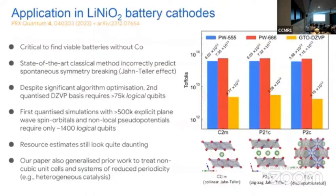Here's the example for the battery cathodes, comparing to an earlier work using a different approach, shown as bars for a couple of example materials. The idea is that simulating batteries allows designing them — say, batteries without cobalt — where classical simulation tends to be quite challenging and can give incorrect predictions. Our Toffoli counts for the pseudopotential approach are actually quite a lot larger than what our earlier approach gave.